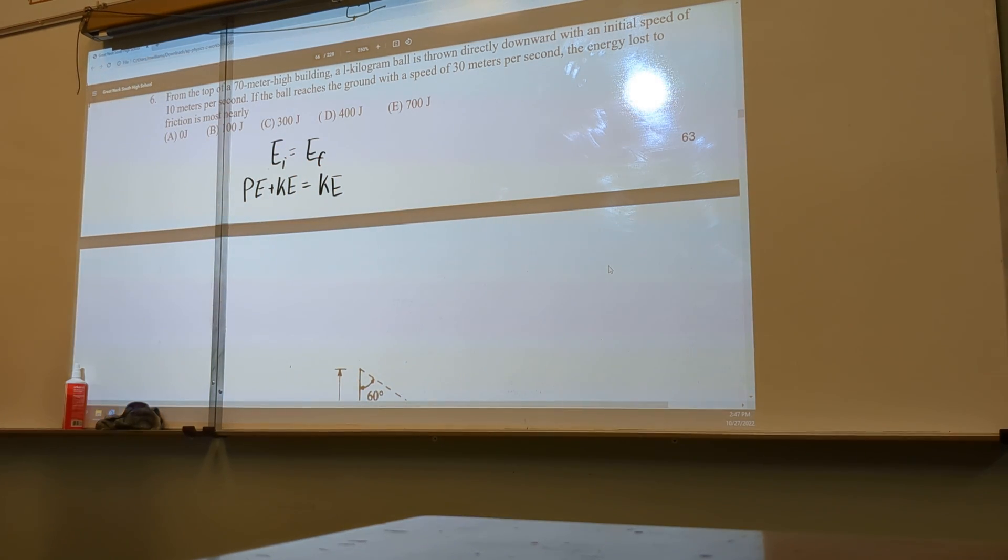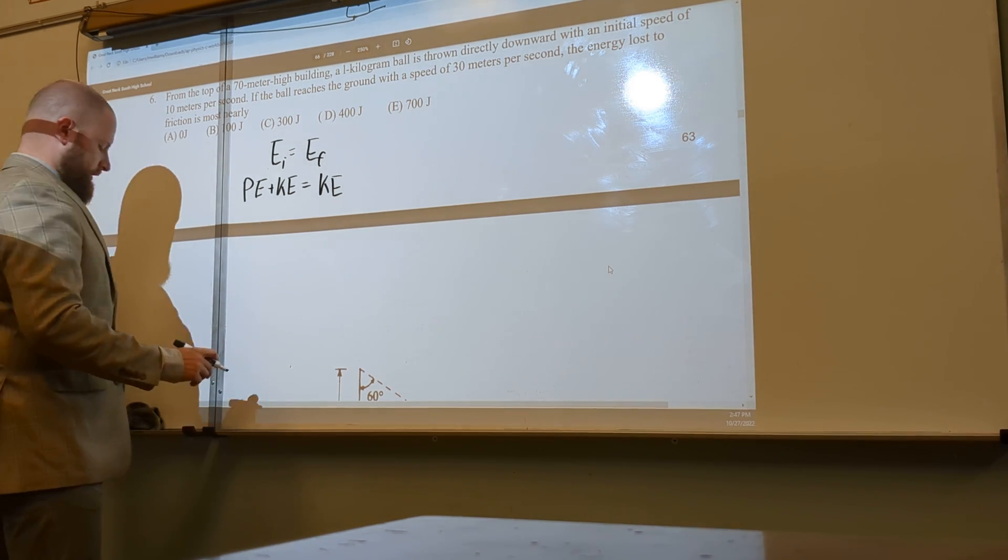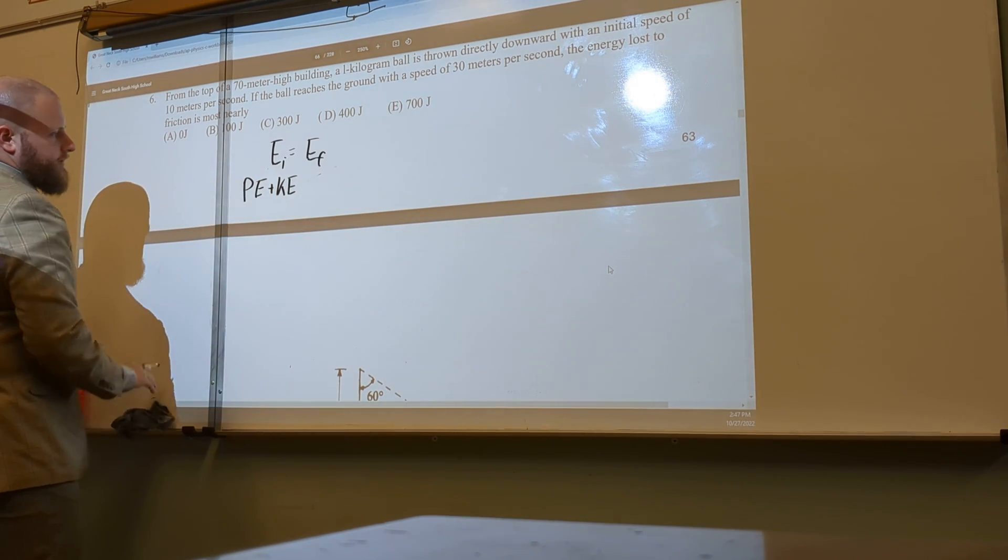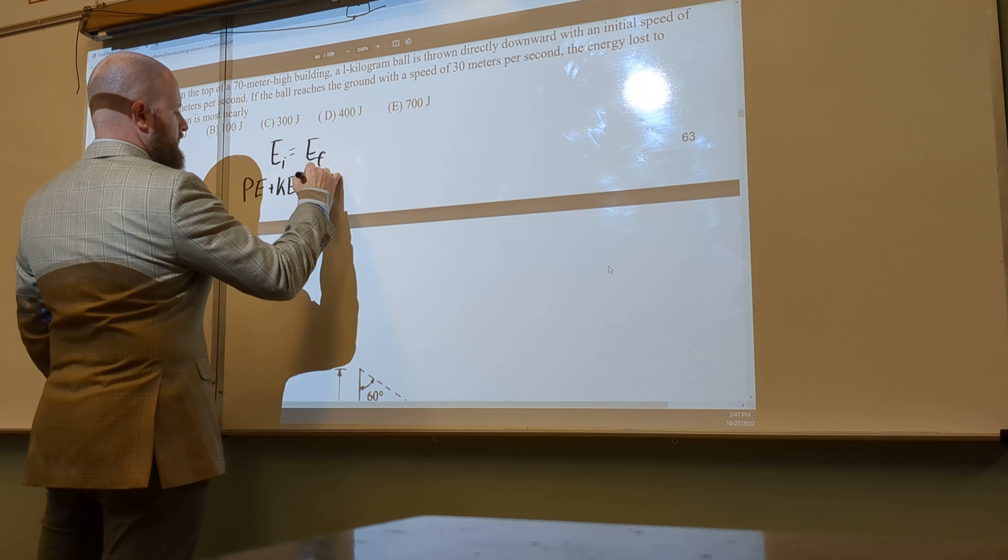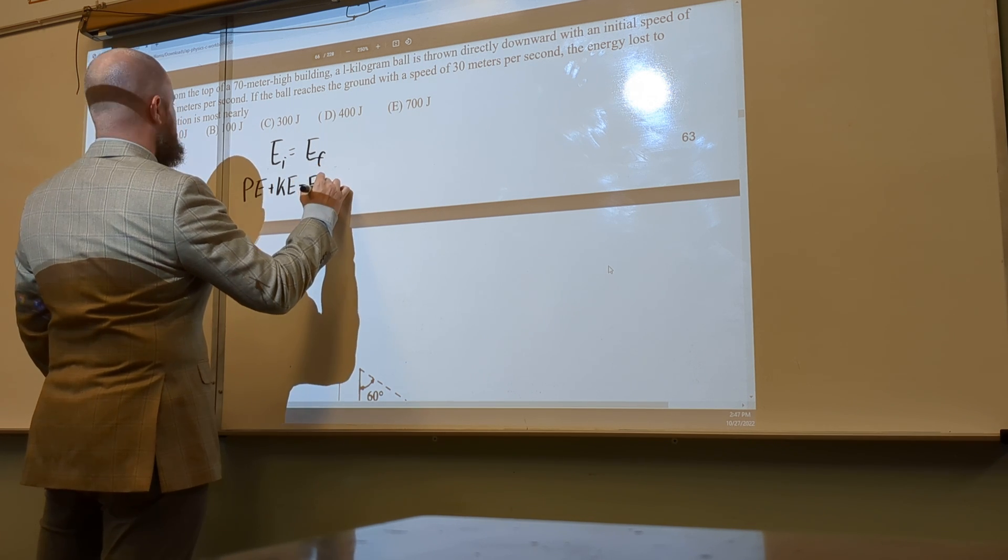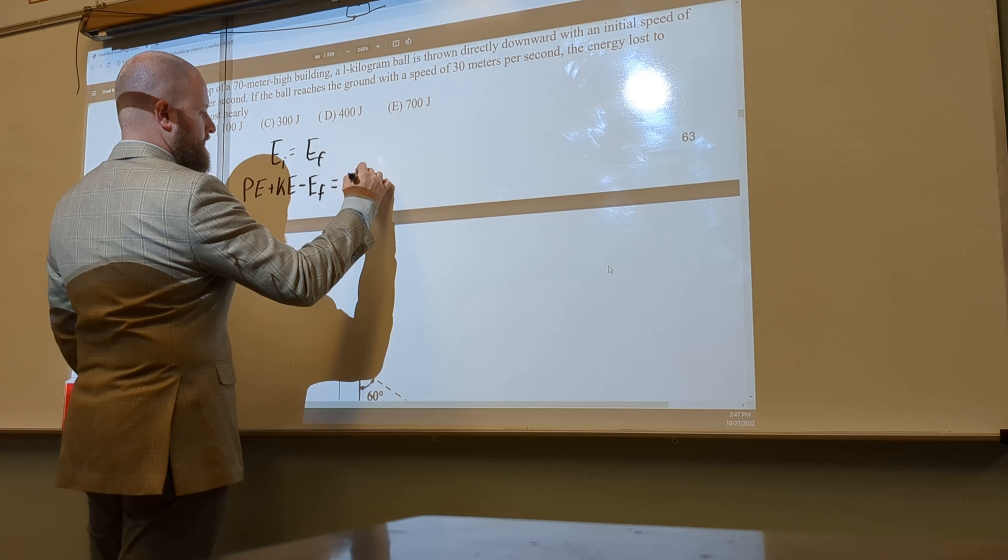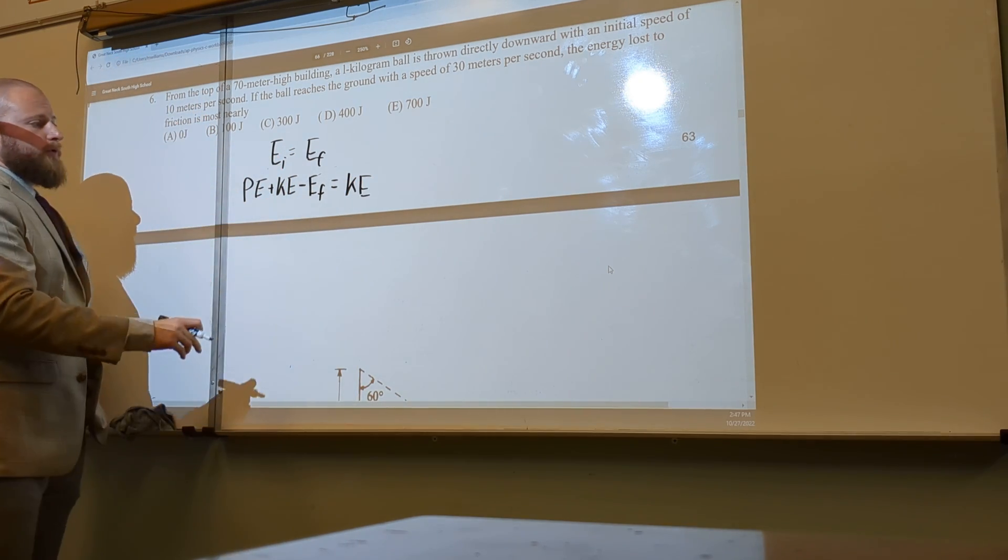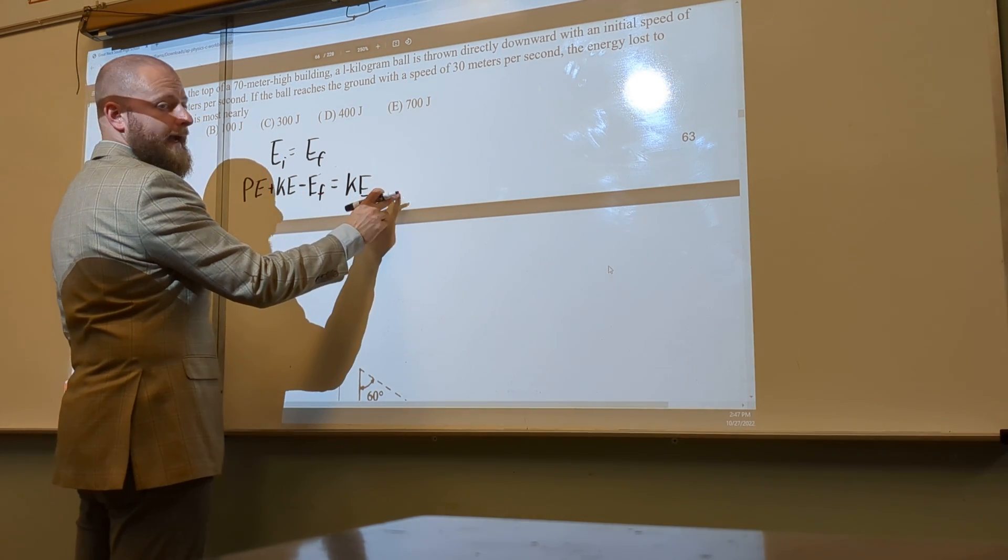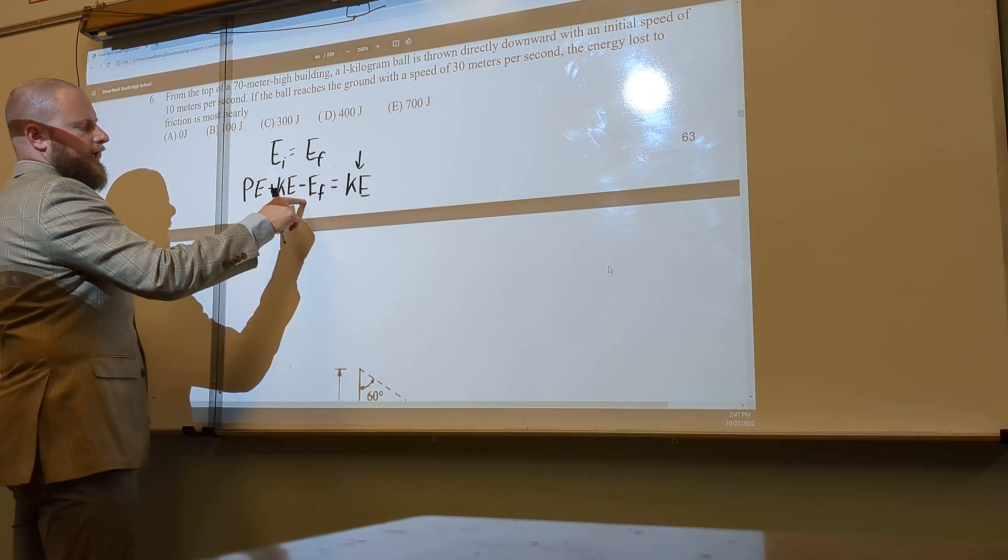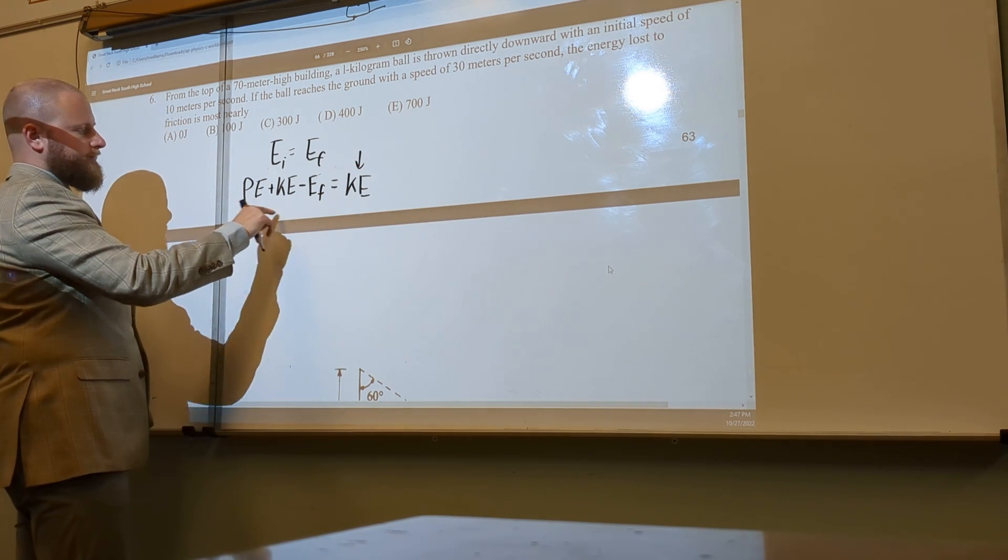Now, we know that we're going to lose some of our energy to friction. So what I can do is I can actually say, let's subtract that from our initial minus energy by friction. This is what I'm trying to solve for. You could also put this on the other side by adding a plus here, but what we're really saying is this needs to go down, right? So I need to subtract something from this side.